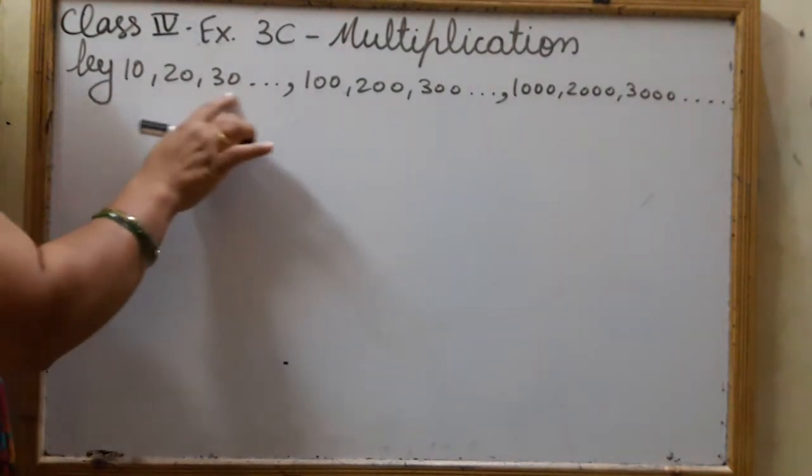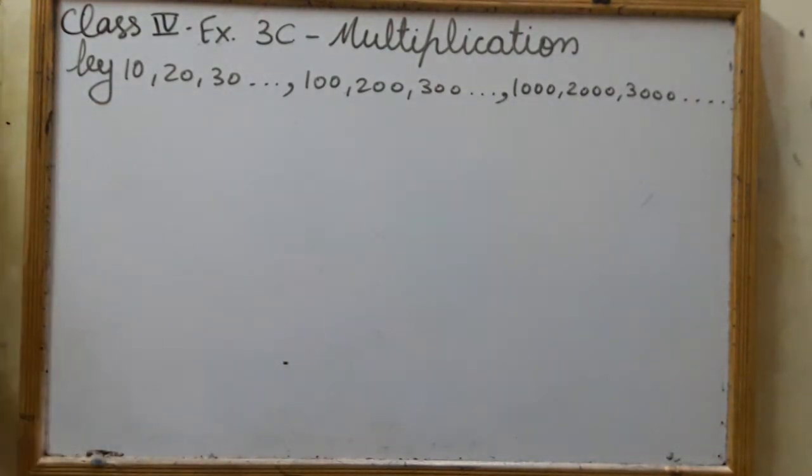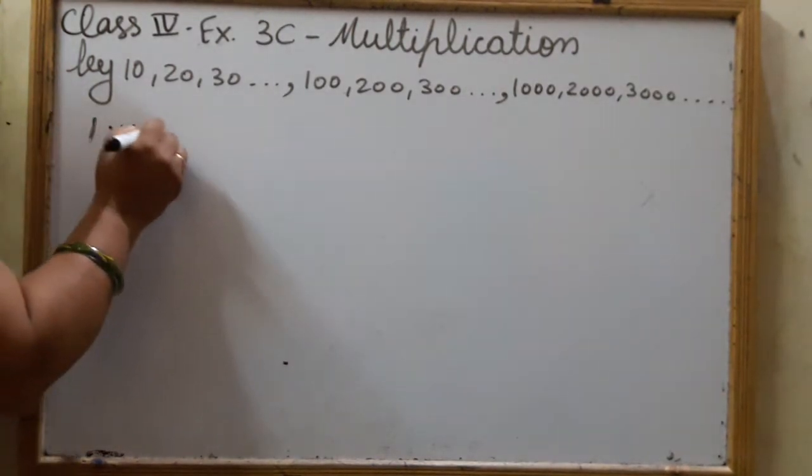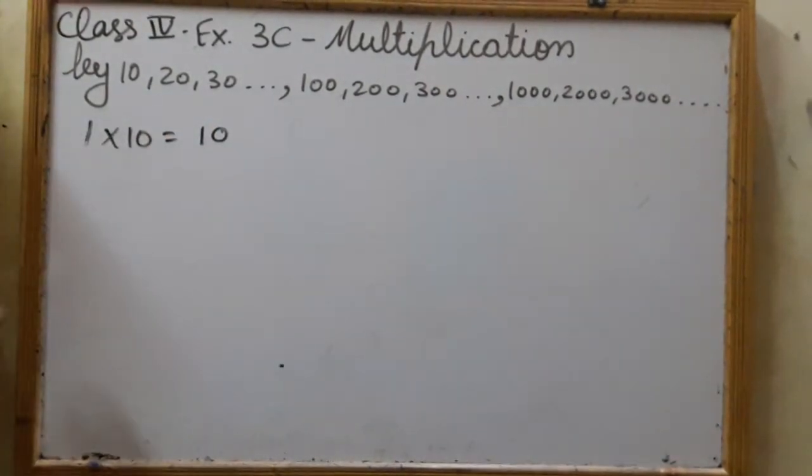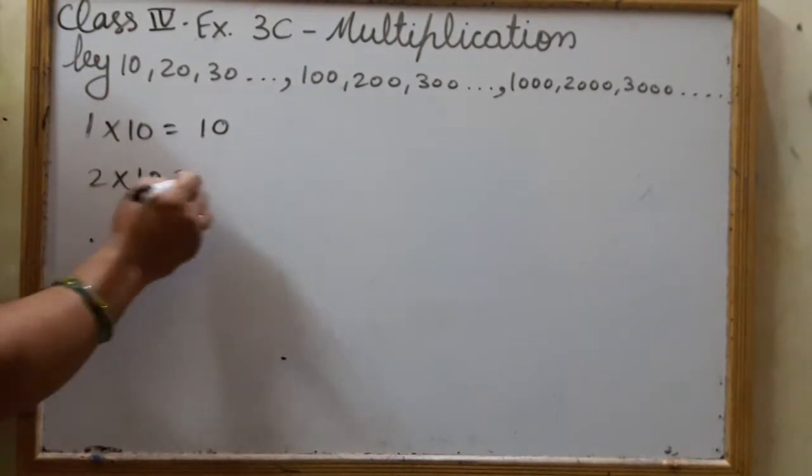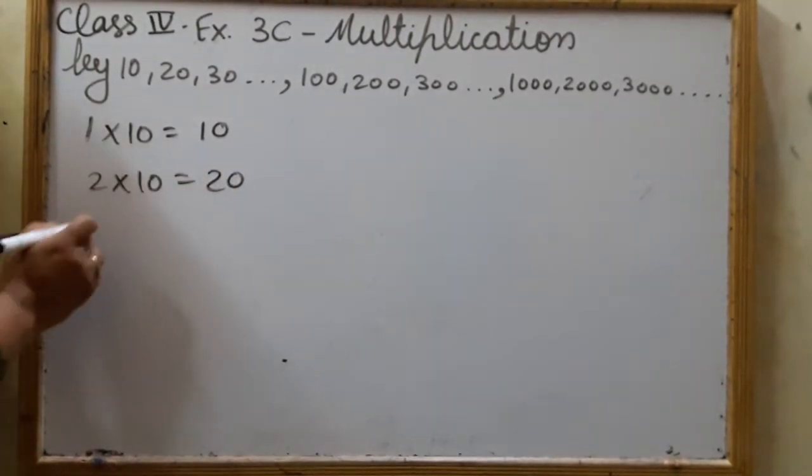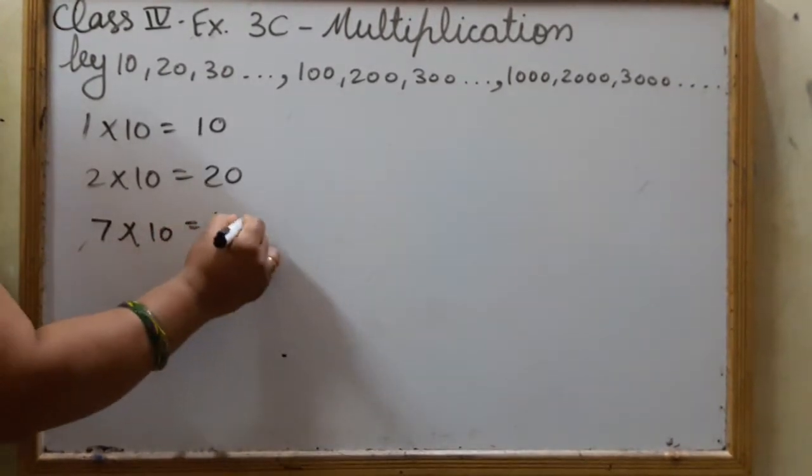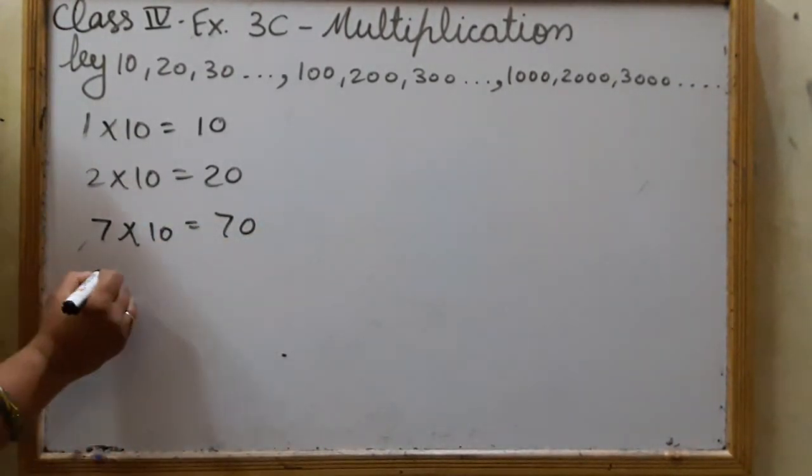What if we multiply 1 by 10? The answer is 10. And what if we multiply 2 by 10? 2 tens is 20. 7 into 10, 7 tens is 70.